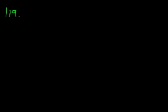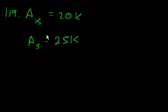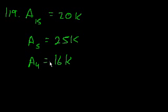Problem 119. The average salary of 15 people in the shipping department is $20,000. The salary of 5 of the employees is $25,000 each, and the salary of 4 of the employees is $16,000 each. What is the average salary of the remaining employees?